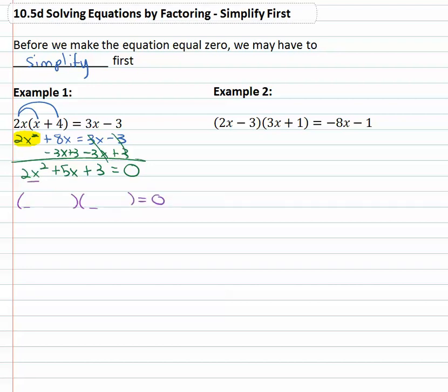First times first equals first, the only way to get 2x squared is 2x times x. Last times last equals last, the only way to get 3 is either 3 times 1 or 1 times 3. We'll try 3 times 1, if that doesn't work we'll switch them. So let's do a little testing here, 2x times 1 is 2x, 3 times x is 3x. Yeah, if those are both positive, it does equal the 5x in the middle. So that did work, we don't have to switch them.